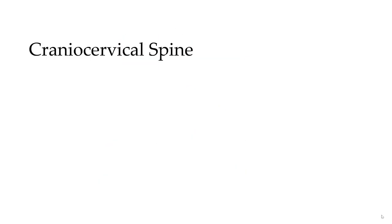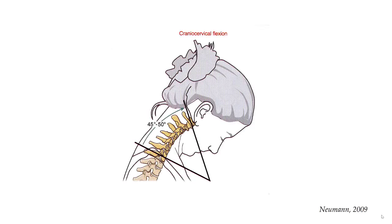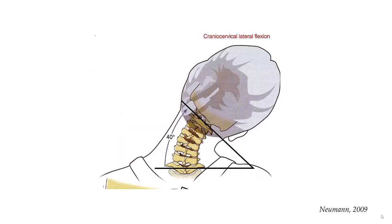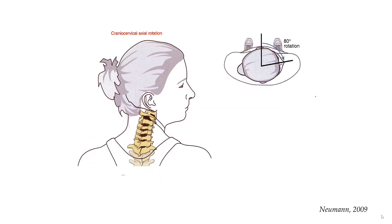The second region is composed of the cervical region and its articulation with the skull. Motions in the craniocervical region include flexion, extension, lateral bending or lateral flexion, and rotation.